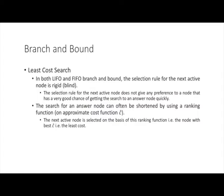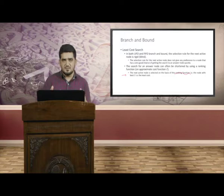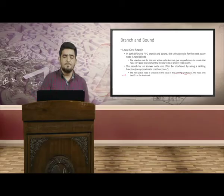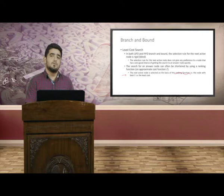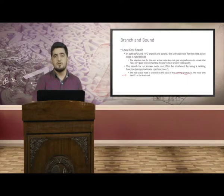In least cost branch and bound, the selection of the next active node is what makes it different from FIFO and LIFO branch and bound. The next active node is selected on the basis of a ranking function — the node with the best approximate cost is selected. We are not using either a stack or a queue; we simply maintain a list of live nodes. From those live nodes we select an active node based on which has the least cost according to the approximate cost function.